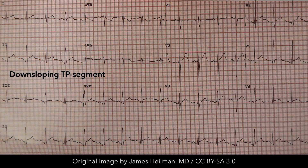In this ECG, we can also note a down-sloping TP segment in several leads, most clearly in leads 2, V4, and V5. This is known as Spodick's sign, which is an early ECG manifestation of pericarditis.